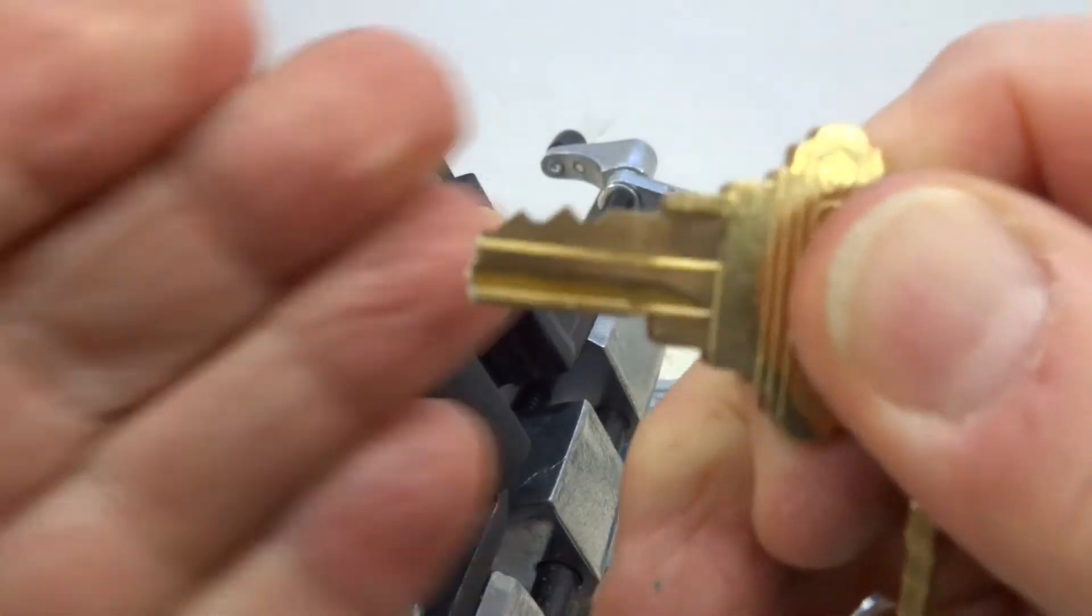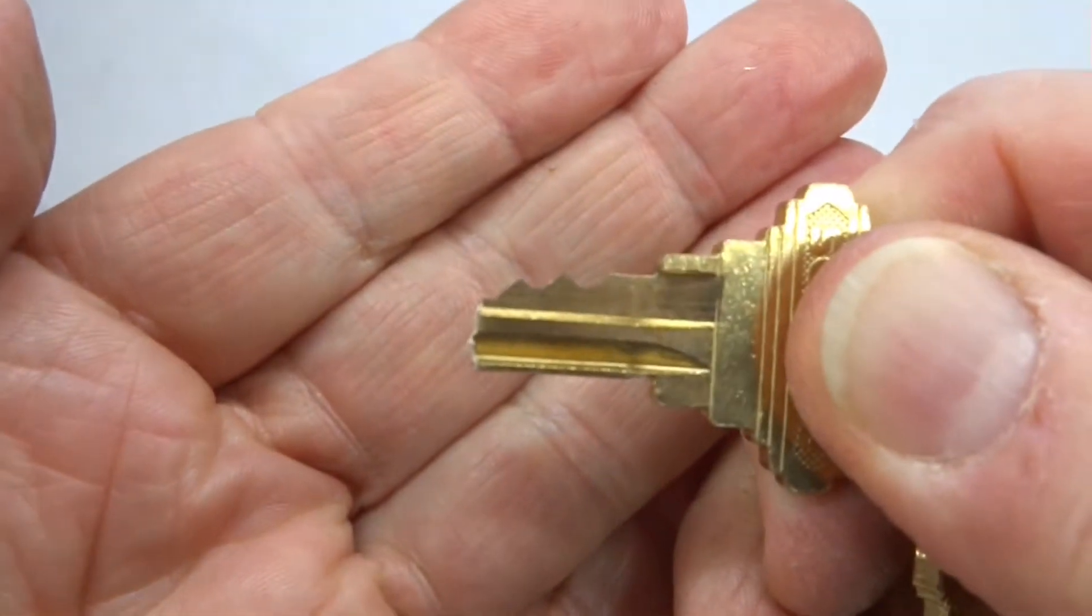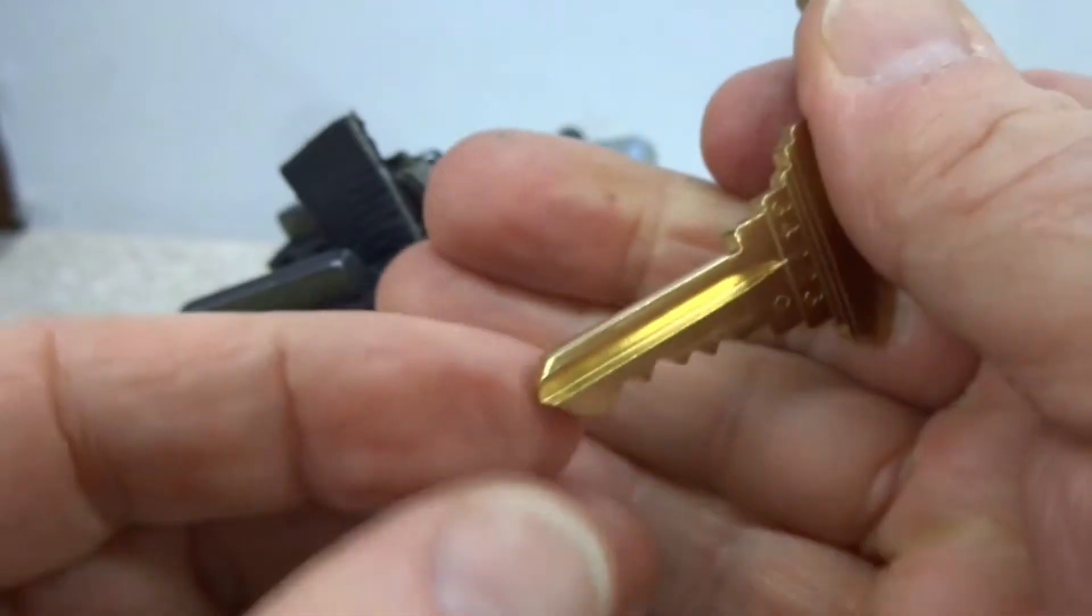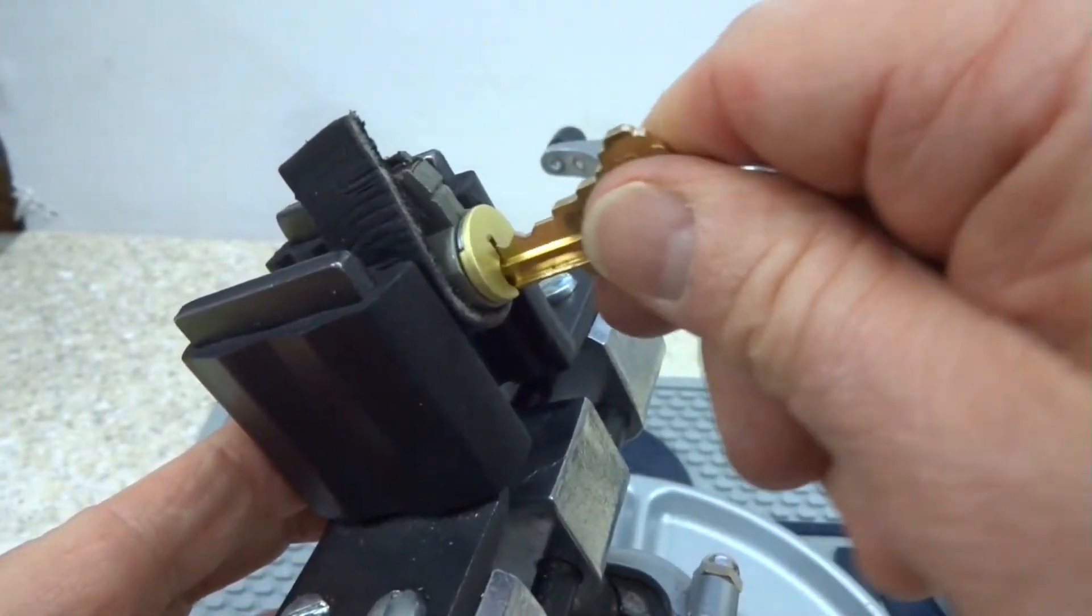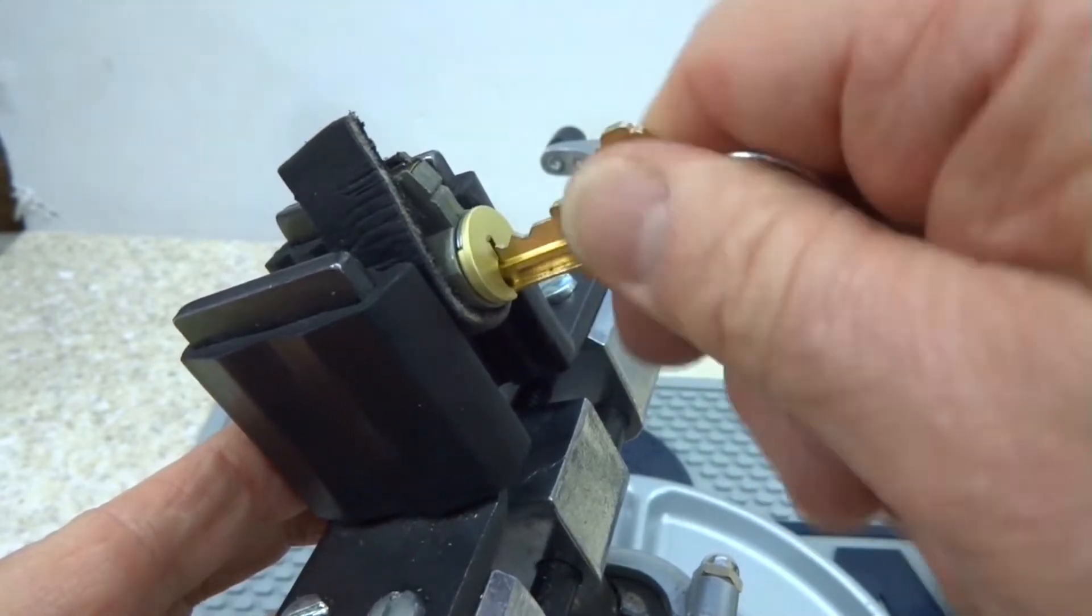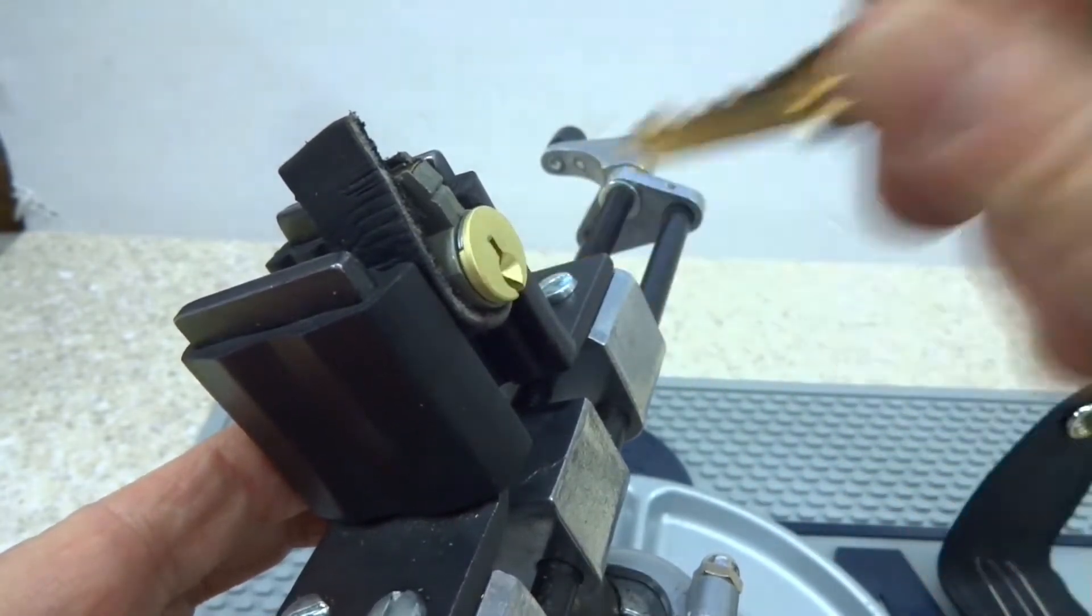Don't you hate it when that happens? You just broke a key off inside of the keyway and you can't take your good key and stick it in there because the tip of that broken key prevents it from going all the way in, so you're not going to be able to get that lock open.